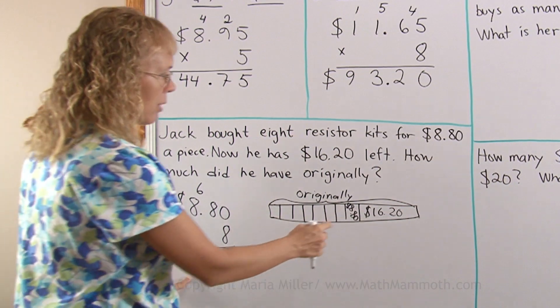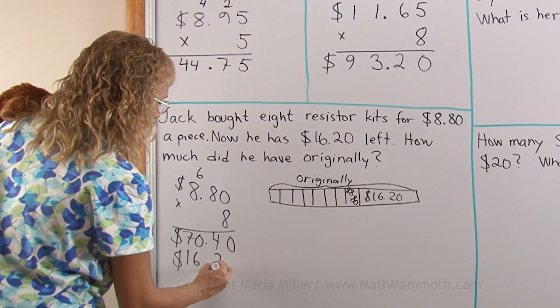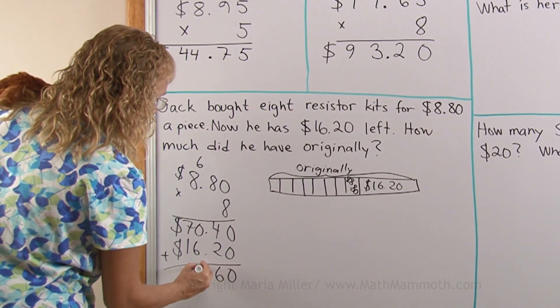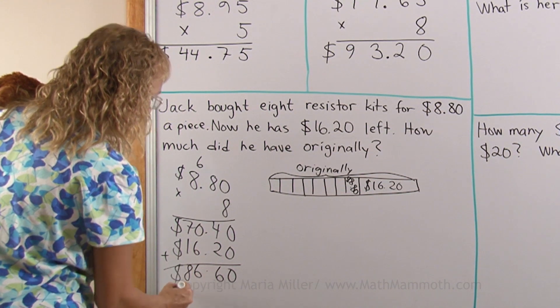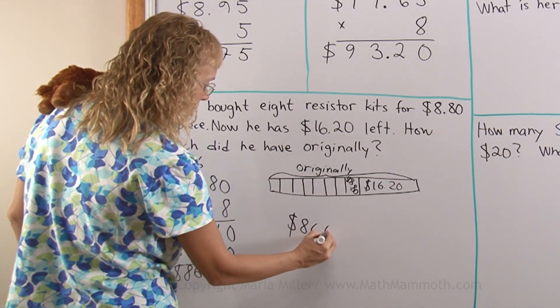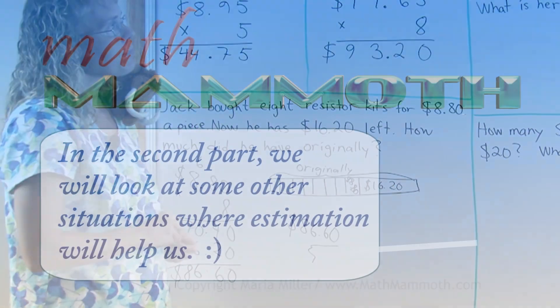And now, like I said, we will need to add that. 16 and 20. And so we get 60 cents here and 6 and 8. Originally, he had, I don't know if he had a piggy bank or what, but this is how much he had originally. $86.60.